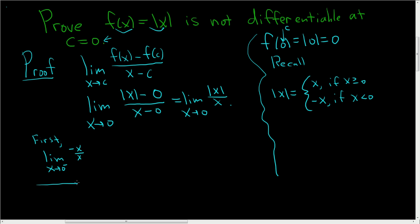If this is 0 and we're approaching from the left, so x is less than 0, we're using this piece here. The absolute value of x becomes negative x. So this is the limit as x approaches 0 from the left of negative 1. That's just negative 1.